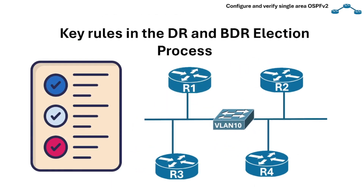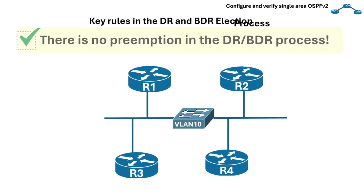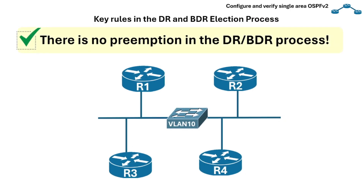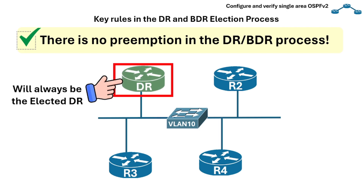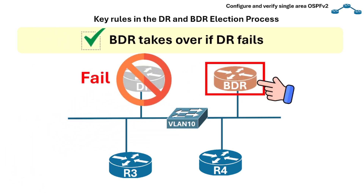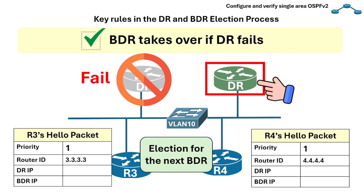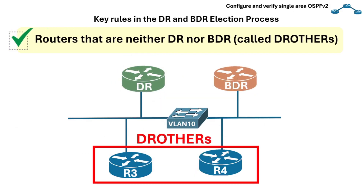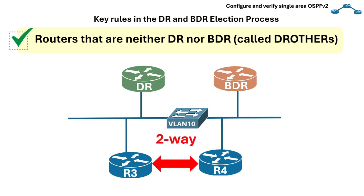Here are the key rules in the election process. There is no preemption in the DR/BDR process — once a DR or BDR is chosen, it stays that way until it goes down, and a new higher-priority router joining later cannot take over. Another rule is that the BDR takes over if the DR fails: when the DR fails, the BDR immediately becomes the DR, and a new election then decides the next BDR. Routers that are neither DR nor BDR are called DR Others, and they only stay in a two-way state with each other.